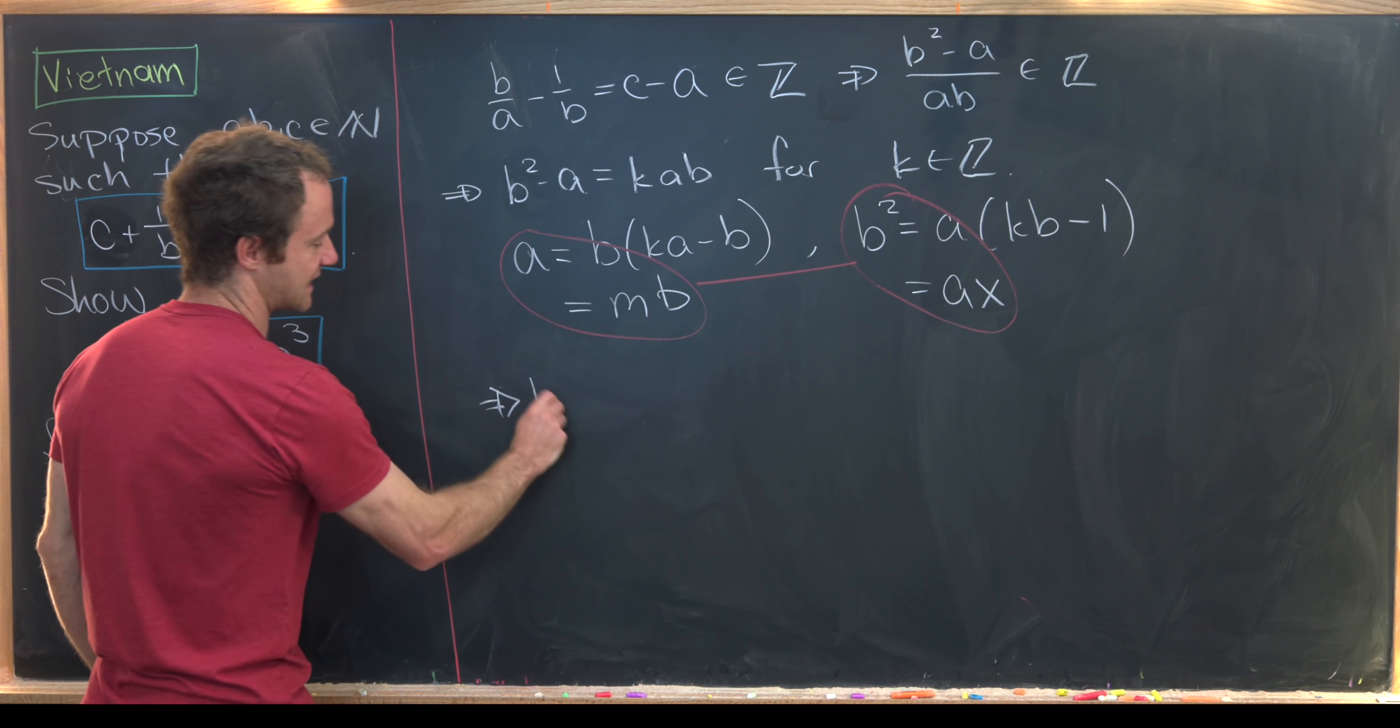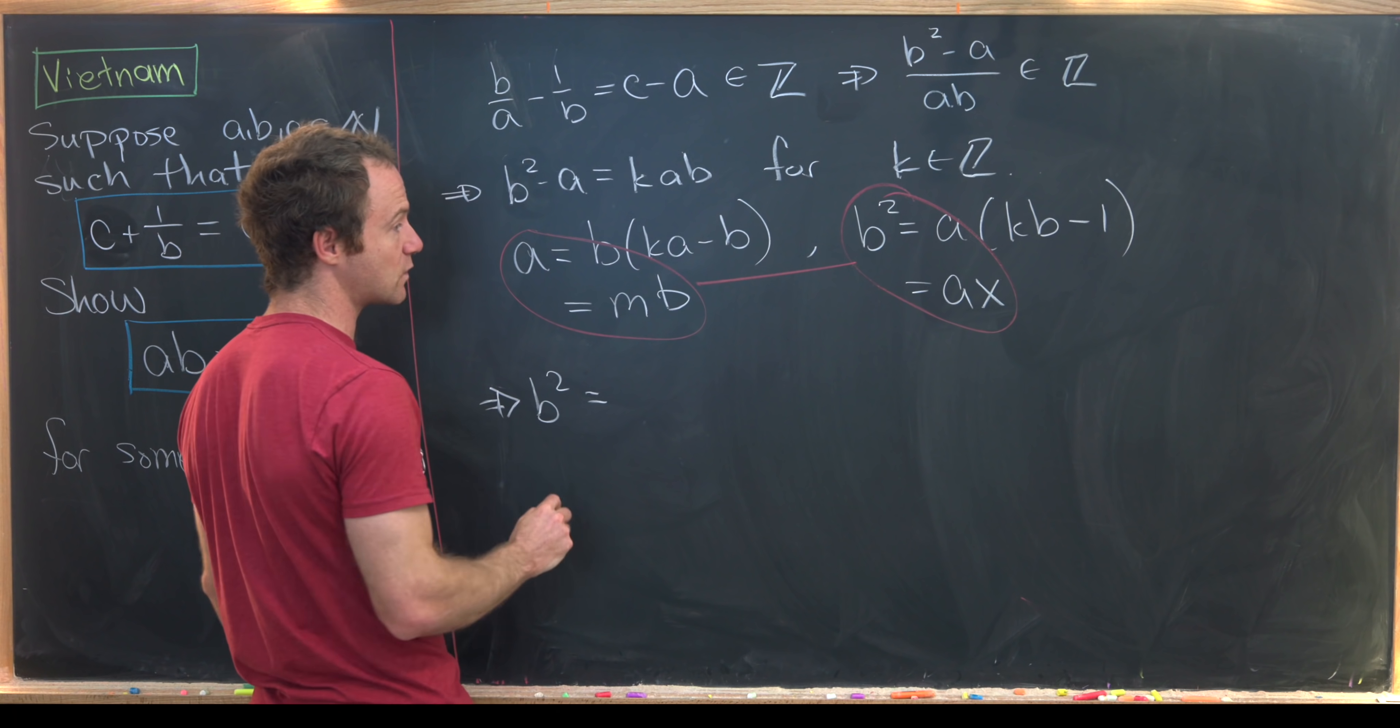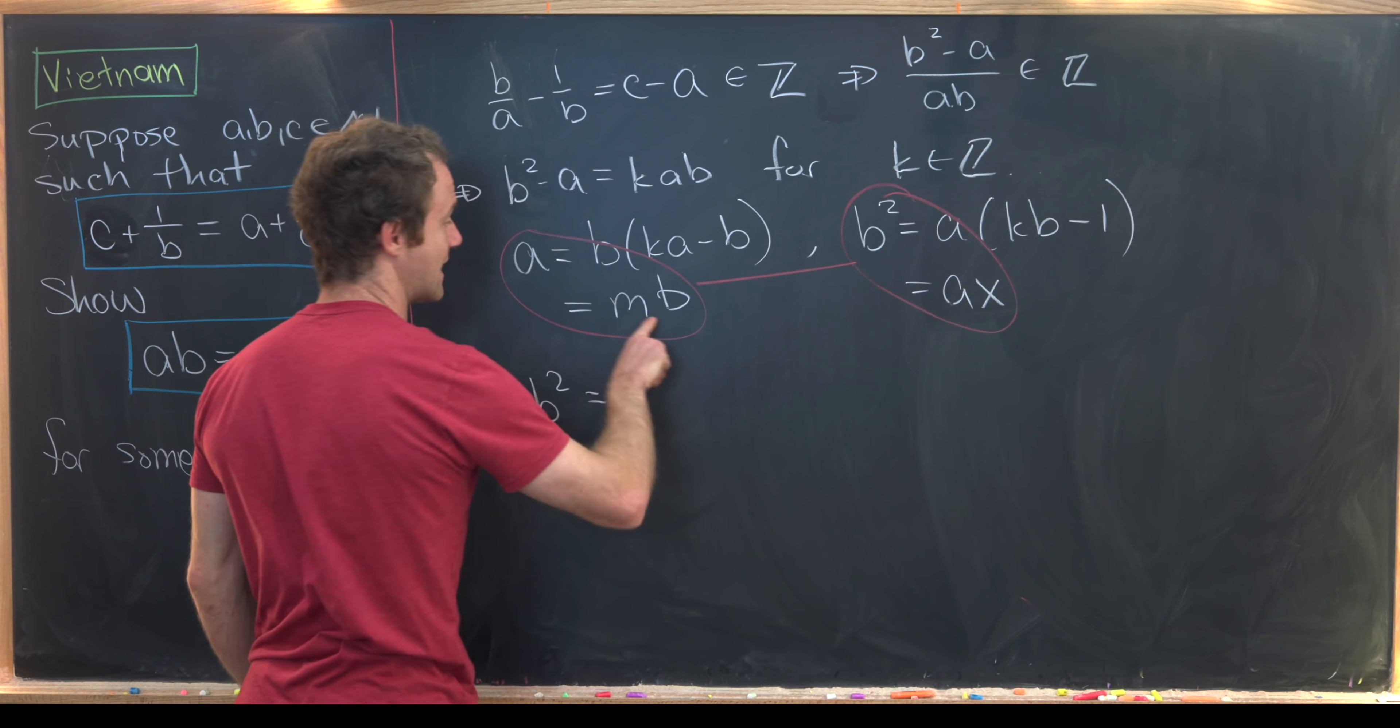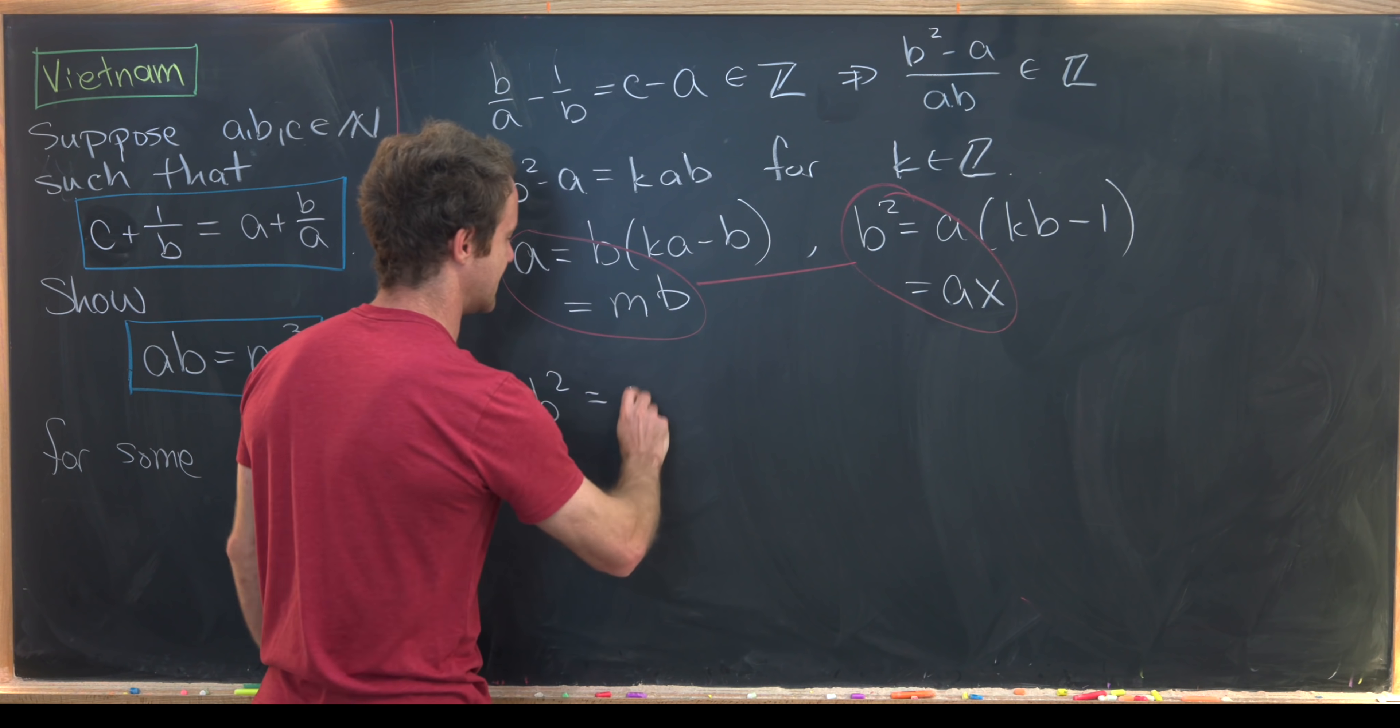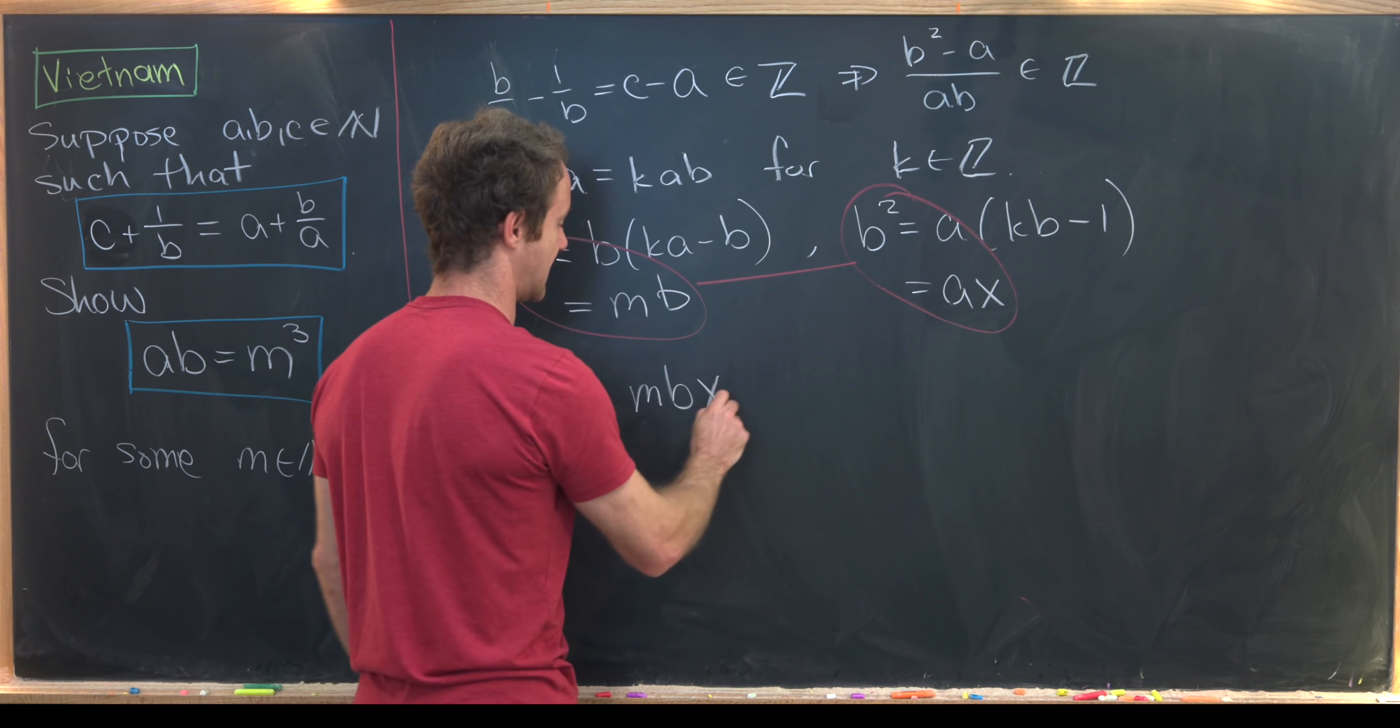So I'll take this version of A and plug it in here. So let's see what that gives us. That gives me B squared is equal to, well, A, but notice that's M times B. So I can write that as M times B times X.